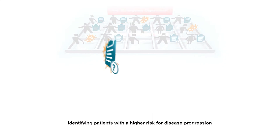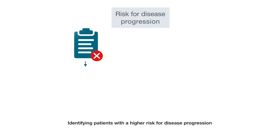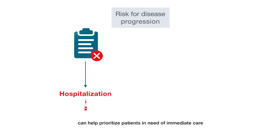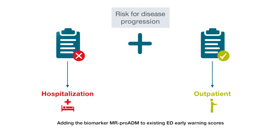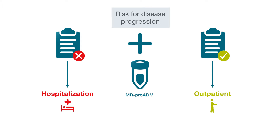Identifying patients with a higher risk for disease progression can help prioritise patients in need of immediate care and discharge those patients eligible for outpatient treatment. Adding the biomarker MR-PROADM to existing ED early warning scores has been demonstrated to improve risk assessment.